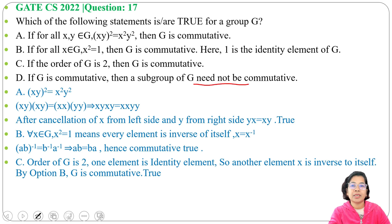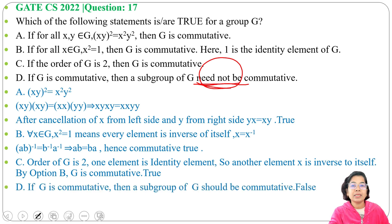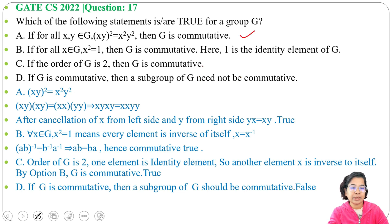Option D: if G is commutative, then a subgroup of G need not be commutative. However, if a group is abelian, its subgroups must also be abelian. Commutative means abelian, so the subgroup must be commutative. Since the statement says 'need not be commutative,' Option D is false.